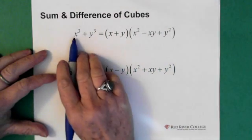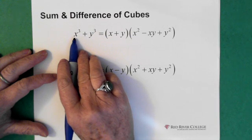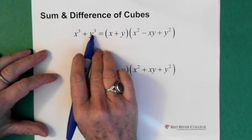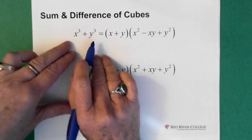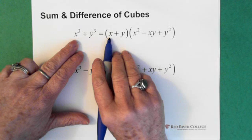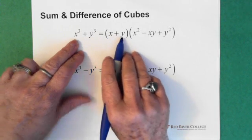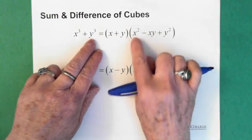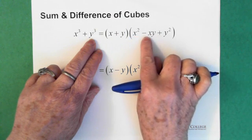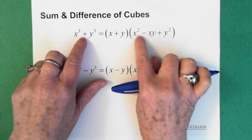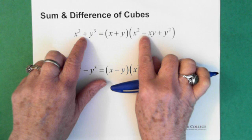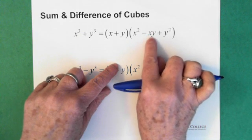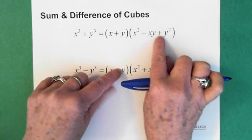You can see here we have something cubed — in this case x. So something cubed added to something else cubed. When we factor that, we end up with the first thing, which is x, added to the second variable, y. That's multiplied by the first variable squared. Notice the negative here — we have a positive in the first bracket, so in the second bracket the next sign is negative. So x squared minus x times y, added to y squared.